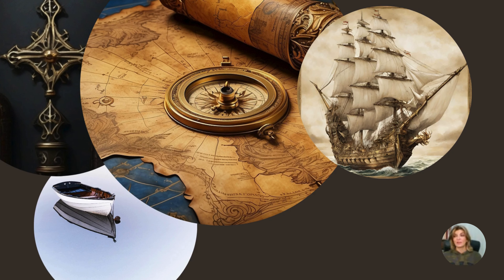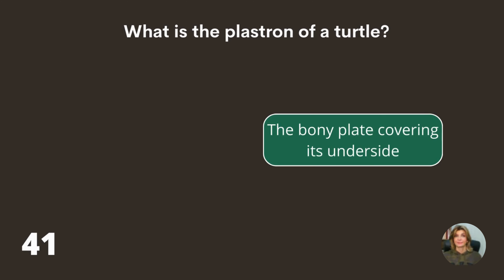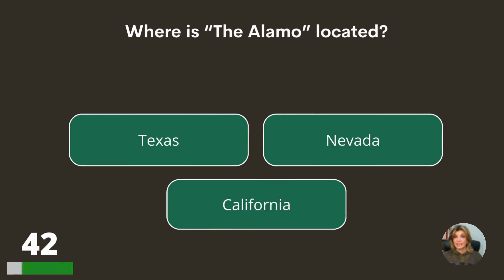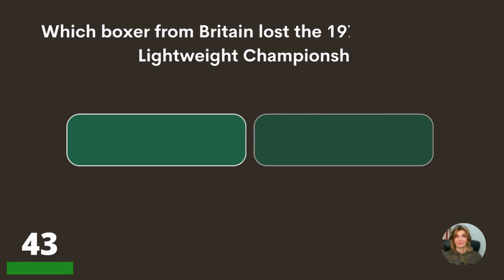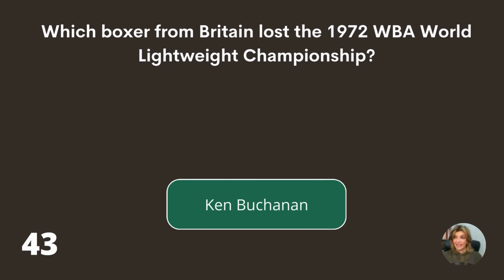Let's go to our mystery round. What is the plastron of a turtle — part of its beak, or the bony plate covering its underside? Where is the Alamo located — Texas, Nevada, or California? Which boxer from Britain lost the 1972 WBA World Lightweight Championship — Jim Watt, Charlie Magri, or Ken Buchanan? Ken Buchanan.